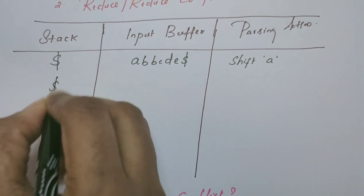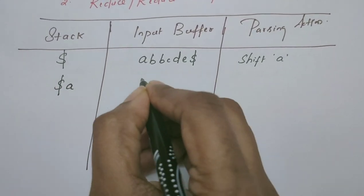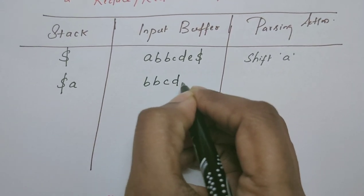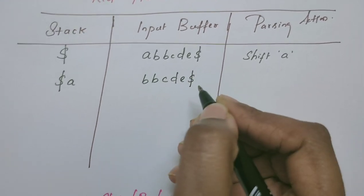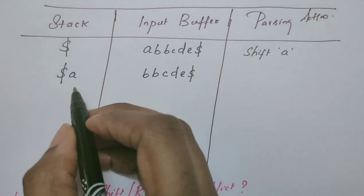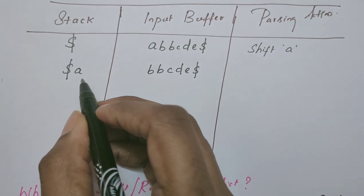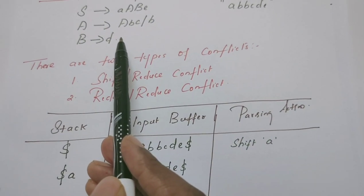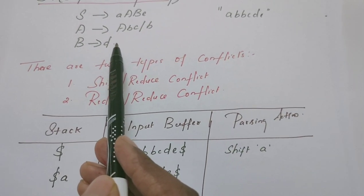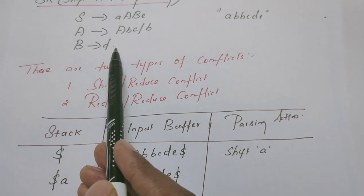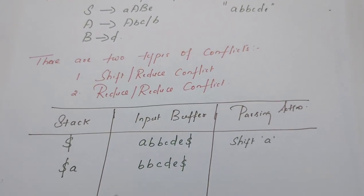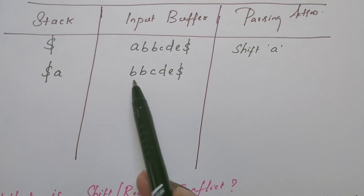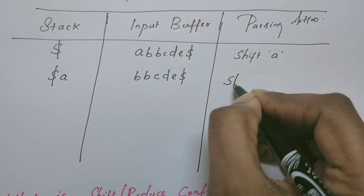Now the remaining string in the input buffer is B, B, C, D, E, dollar. A cannot be reduced because there is no production rule in the grammar such that A can be reduced to some non-terminal. So the next possible action the parser can perform is only shifting B.